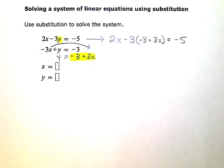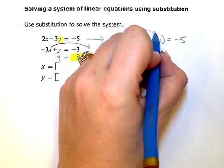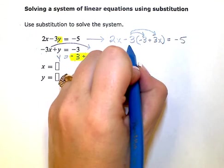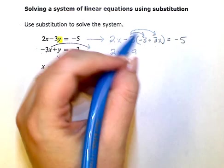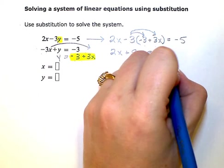Now I just go ahead and solve this equation. So the first thing I'm going to do is distribute. So 2x, negative 3 times negative 3 is positive 9, and negative 3 times positive 3x is negative 9x equals negative 5.